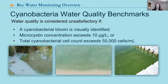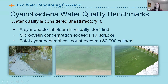According to the Safe Beach Protocol, there are three situations when water quality is considered unsatisfactory: first, when a bloom can be visually identified; second, when microcystin concentration exceeds 10 micrograms per liter; and third, when cyanobacterial cell count exceeds 50,000 cells per milliliter. The latter two are determined when a water sample is collected and submitted to the lab.